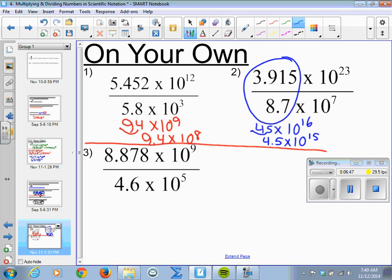And finally our last one. I'll divide 8.878 by 4.6, and this will give me 1.93. And here we have 10 to the 4th power. We're in scientific notation, so we are all done.